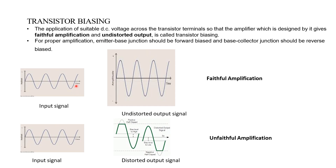When we apply this kind of signal to the amplifier, at the output we will get a large signal — the amplitude of the signal will be increased, but the type of signal will remain the same. The frequency will be the same as the input signal's frequency. If the input signal is a sine wave, the output will also be a sine wave; if input is a square wave, output will also be a square wave. Only the amplitude is increased by the amplifier.